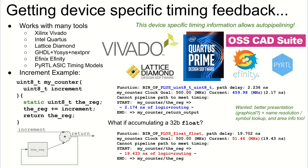First is timing feedback. If you're giving software developers the ability to take C code and get hardware out the other side, they're going to do some wild things. The tool provides timing feedback so they can see, for example, that adding two 8-bit numbers together has significantly lower delay and higher operating frequency, compared to the huge delay of adding two floating point numbers together, which results in a lower frequency. This works with a range of manufacturer synthesis place-and-route tools, as well as the open source CAD OpenROAD flow.